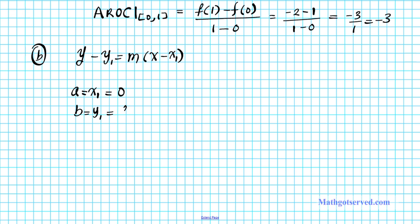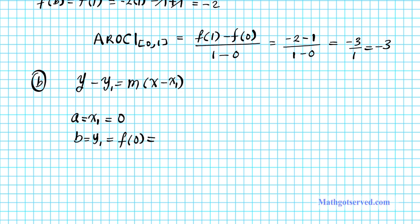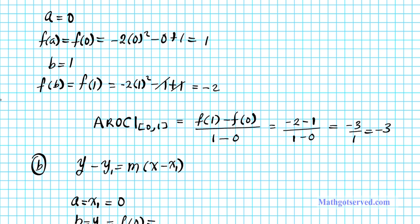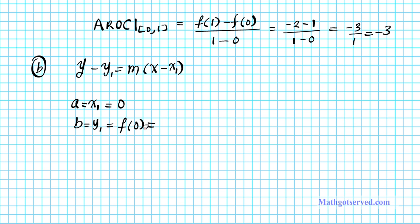What is y₁? y₁ is f(0). If I evaluate the function at 0, f(0) is 1. So there goes our point. And then our slope m is the average rate of change evaluated at [0,1], which we did earlier and that's -3.